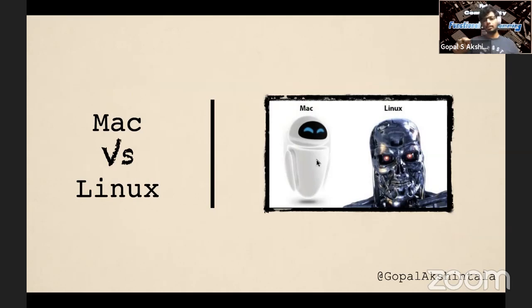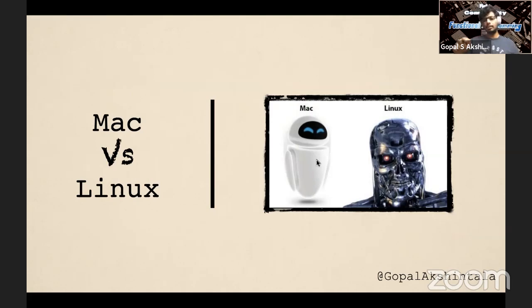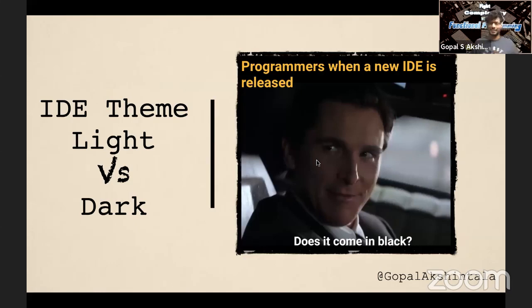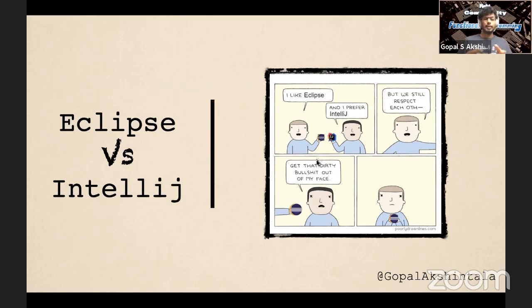First on the list: Mac versus Linux. I intentionally avoided Windows here — all Windows users, please excuse me. This is the war between developers where Linux users feel they have a powerful system and Mac users feel they have a stable system, but both have a cold war in between. Next: IDE light theme versus dark theme. I personally like light themes because they make me feel light. And then Eclipse versus IntelliJ. Since we're in a Kotlin talk, I can be biased for IntelliJ, but Eclipse is great — it's free and great. I'm going to use IntelliJ for today.